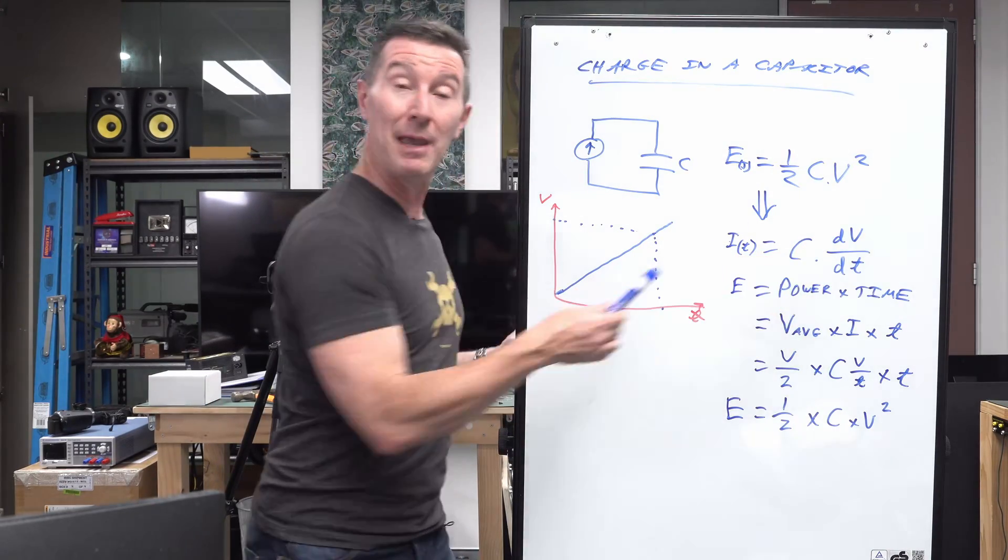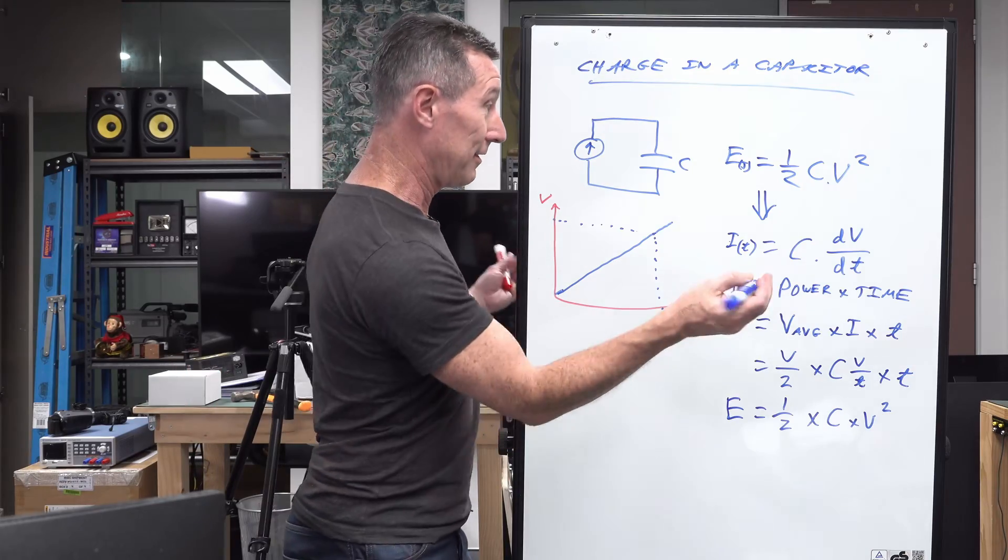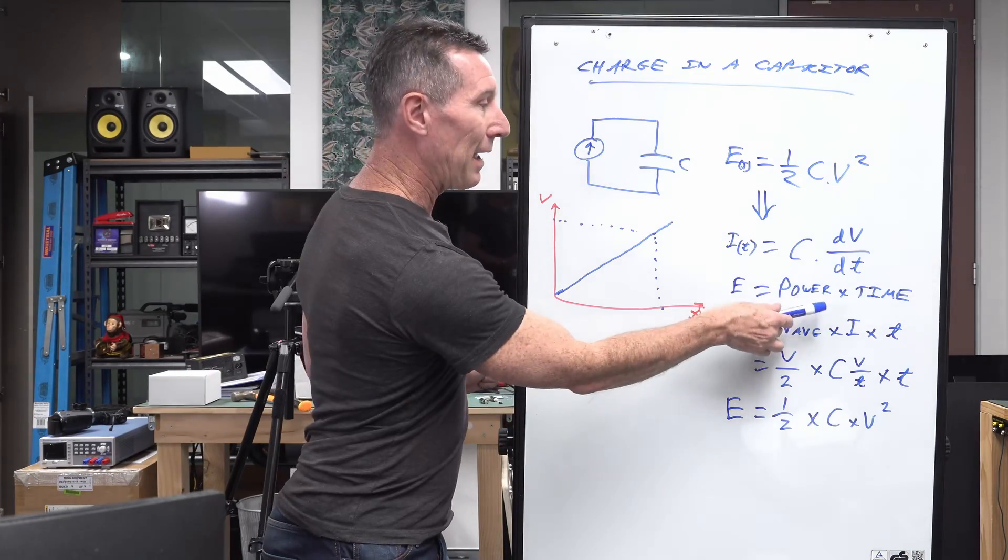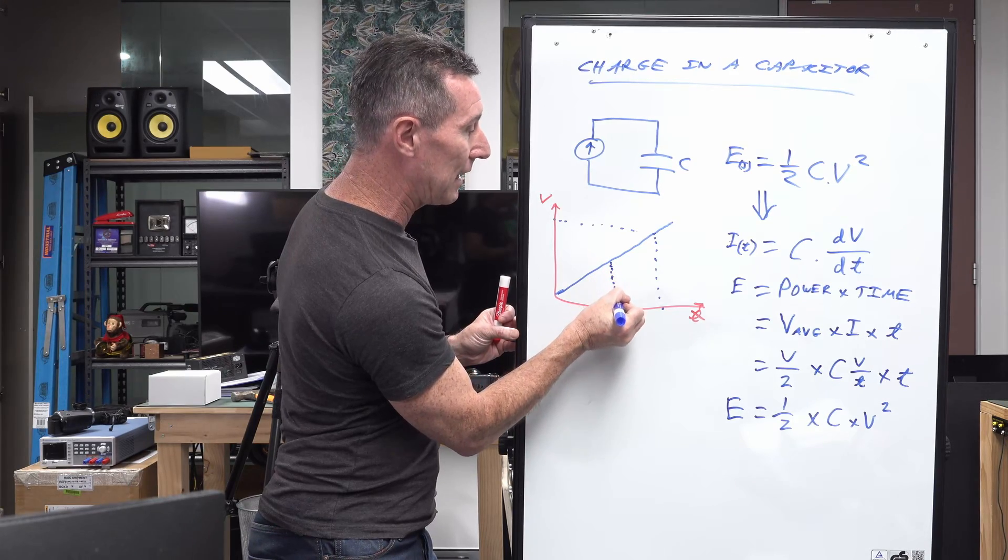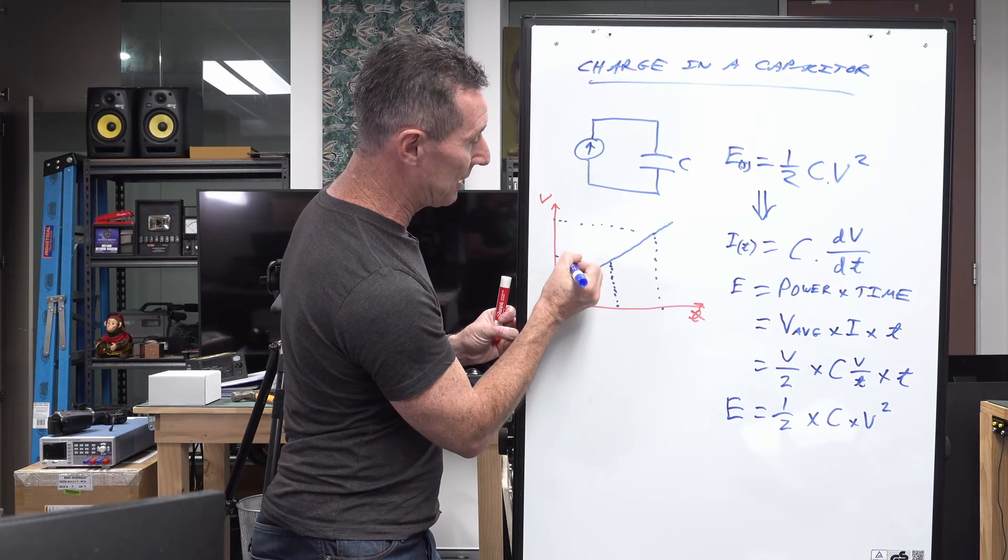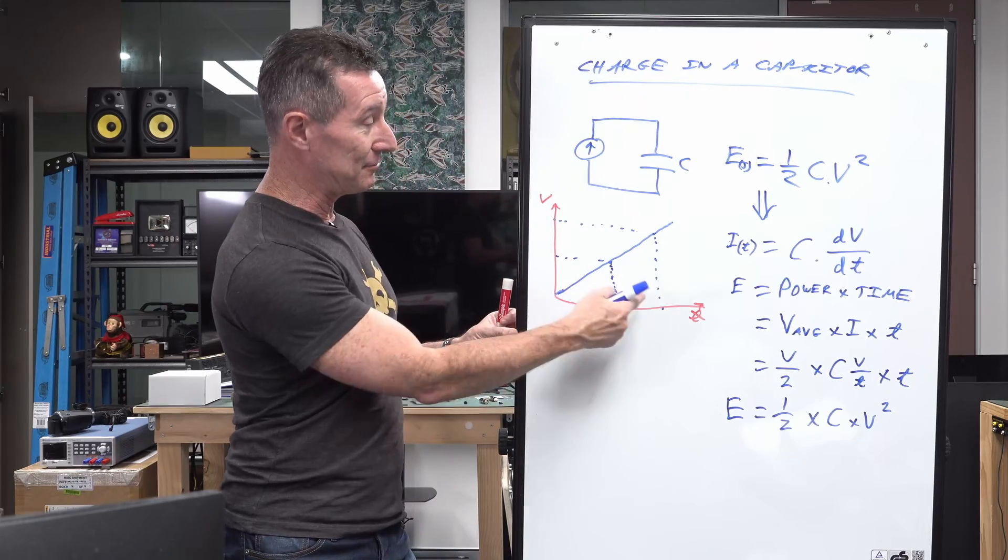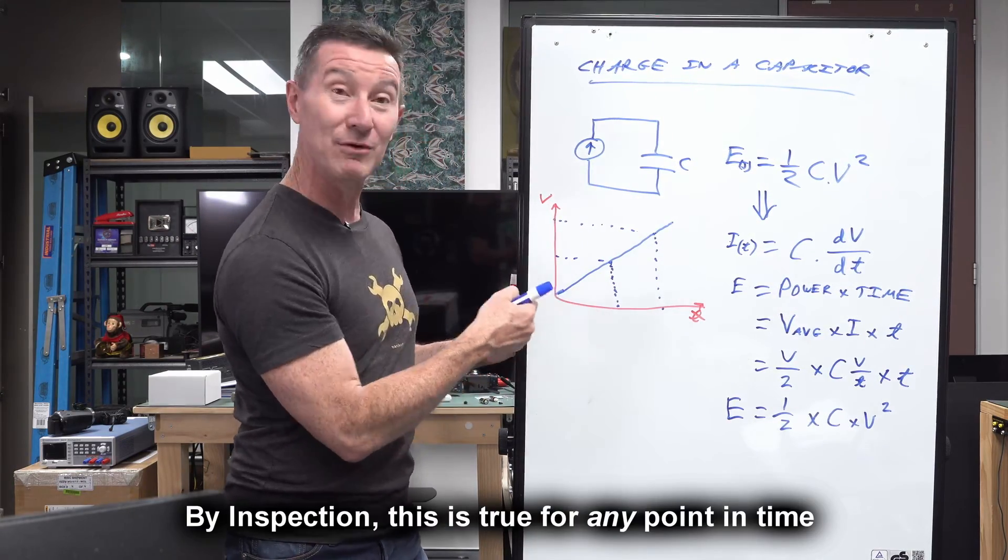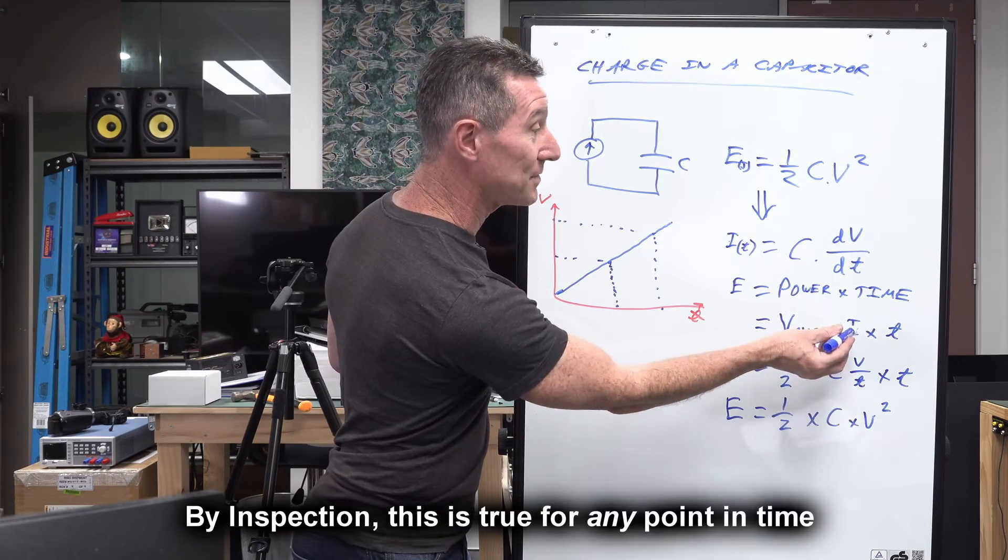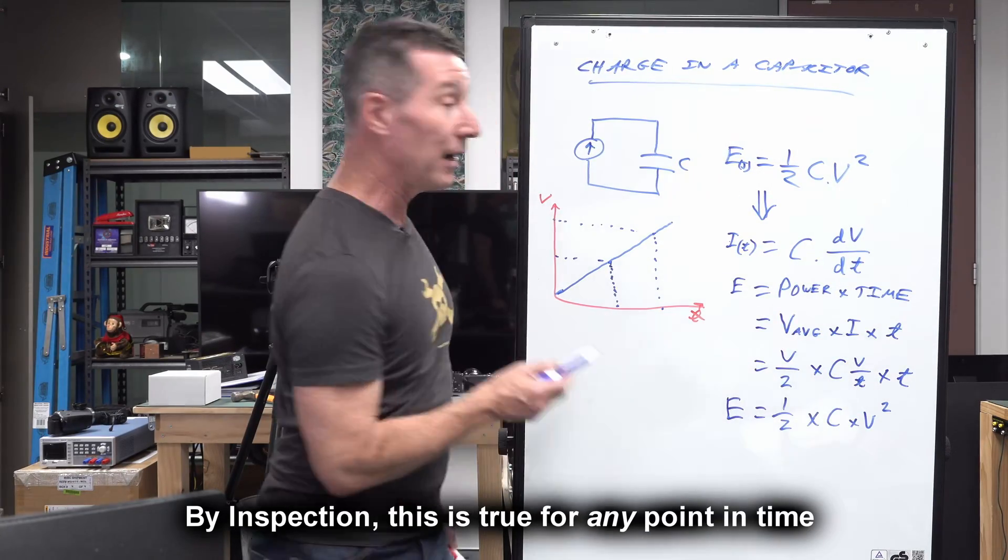So now we can say energy equals power times time, right? That's just fundamental. But power can be the average value here, which is actually going to be half. Because it's linear like this, the average voltage is actually going to be half. So it's half times the current times time.